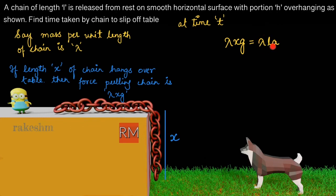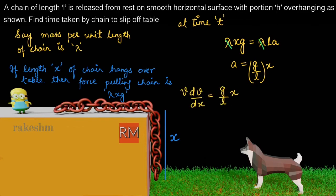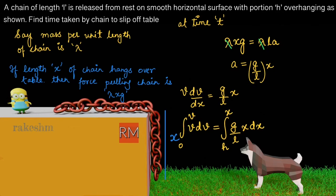The total mass of the chain is lambda times the total length L. One point to note is that the acceleration vector is not the same direction for all points on the chain, but the magnitude of acceleration is the same for all points. We cancel lambda on both sides, rearrange the terms, and write a = (g/L)·x. Next we write acceleration as v·dv/dx = (g/L)·x. Taking dx to the other side, we get v·dv = (g/L)·x·dx, and now we integrate on both sides to find the speed of the chain as a function of x.